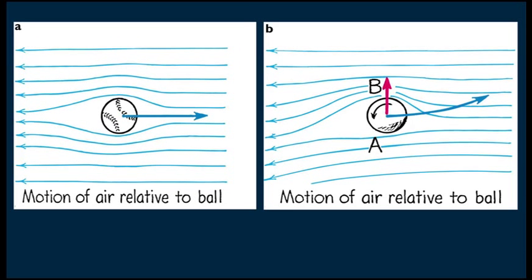But what if the ball is spinning? Recall that close-together streamlines indicate decreased pressure. The crowding of streamlines on side B, where the pressure is lower than on side A, produces a deviation as indicated by the red arrow. So the ball curves away from a straight-line path as indicated by the blue arrow.